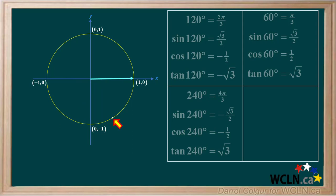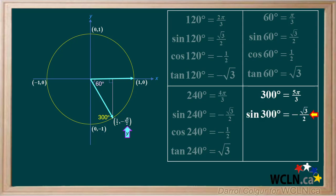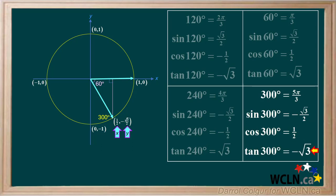Now we'll put a mark in quadrant 4. This corresponds to a principal angle of 300 degrees. We'll draw an arrow here to show the terminal arm of this angle. The coordinates for this point are positive 1 half for x and negative root 3 over 2 for y. 300 degrees is equal to 5 pi over 3 radians. We'll draw in a right triangle here. The reference angle for the principal angle of 300 degrees is 60 degrees. The sine is y over r, which is negative root 3 over 2. The cosine is x over r, which is positive 1 half. The tangent is y over x, which is negative root 3 over 2 divided by positive 1 half, which comes out to negative root 3. We see that in quadrant 4, the cosine is positive and the sine and tangent are both negative. This is true for all angles in quadrant 4.